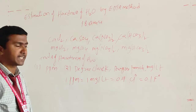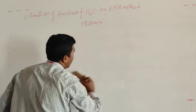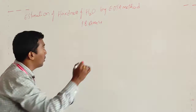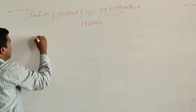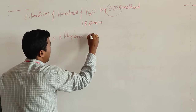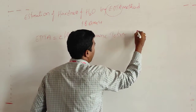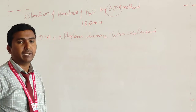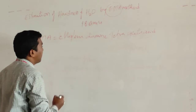Now, how do we estimate hardness of water? Before going into the estimation, first we need to know about EDTA. What is the full form of EDTA? EDTA is ethylene diamine tetra-acetic acid. For chemical lab purposes, we use the sodium salt of ethylene diamine tetra-acetic acid.